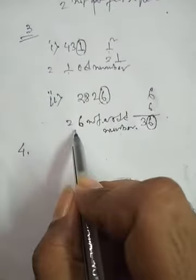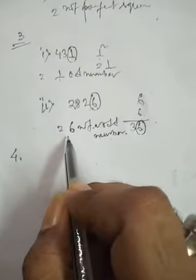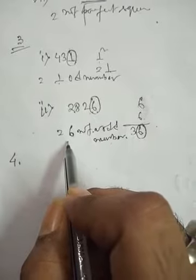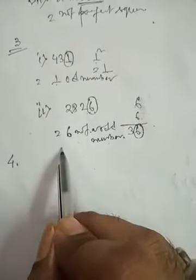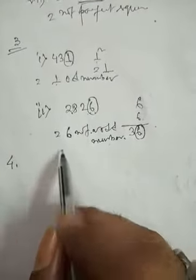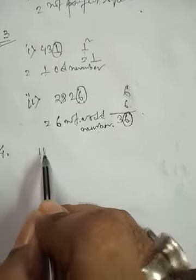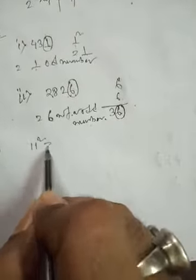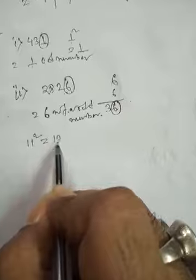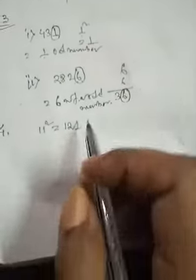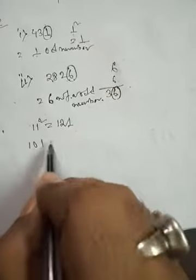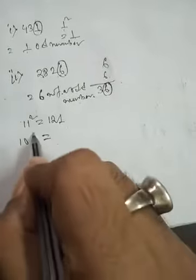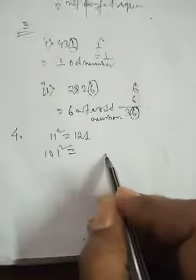Now students, we will discuss number four: observe the following pattern and find the missing digits. We have to find the pattern. Number one, it is given as 11 squared. We know 11 squared is 121. Then it is given 101 squared, and 101 squared will be...